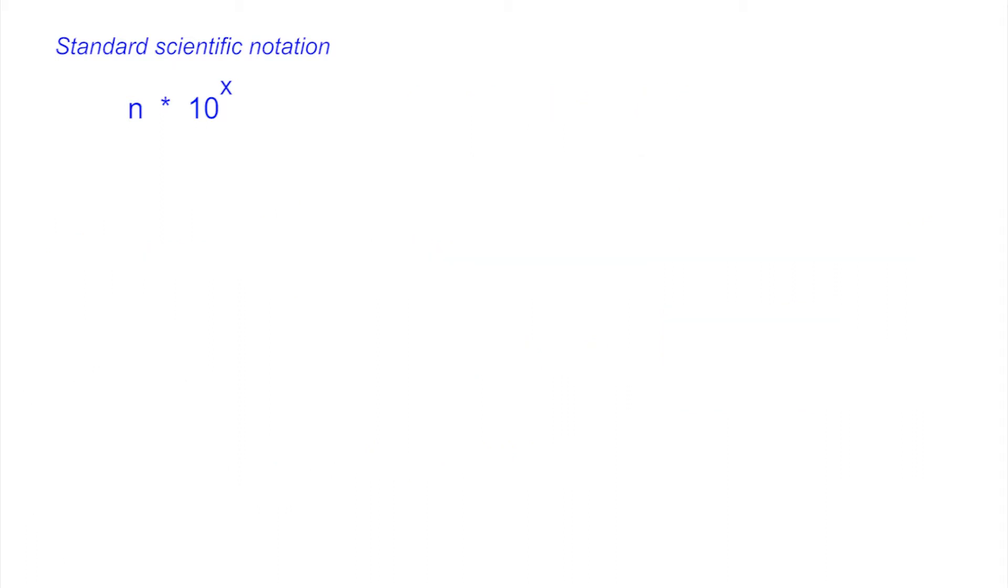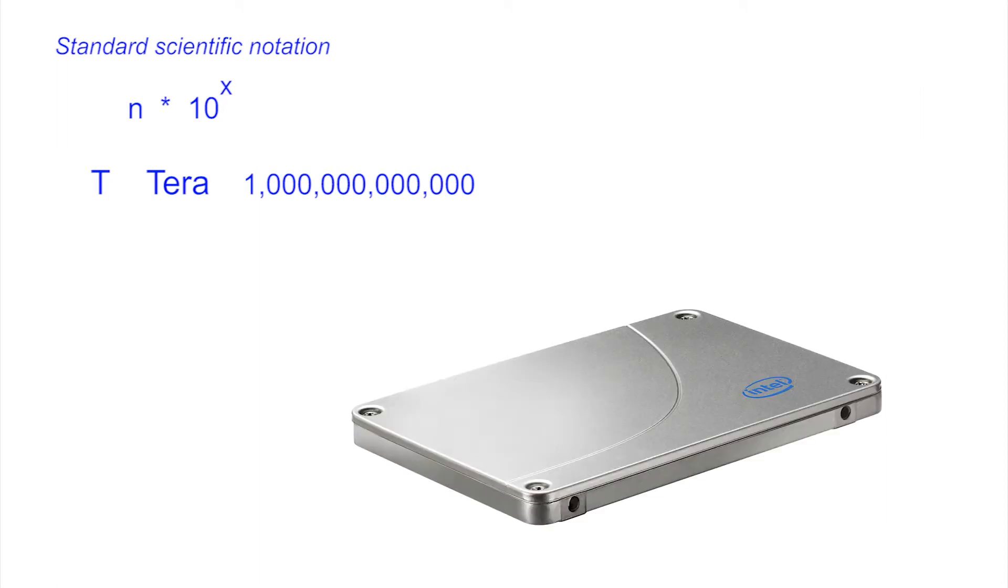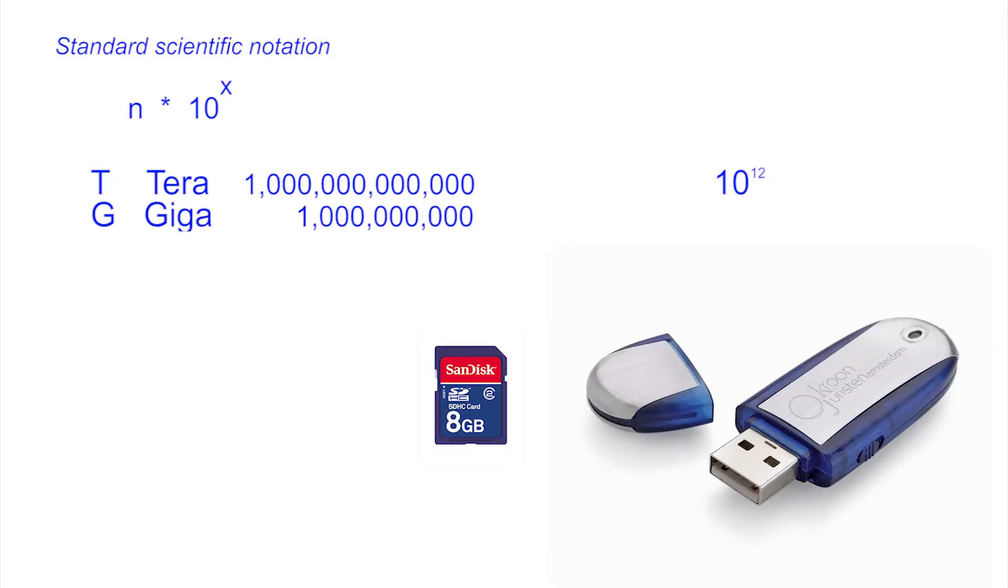Typical prefixes are T as in tera, a terabyte, used in disk sizes, 10 to the power of 12. G as in giga, a gigabyte, typical size of a USB stick, 10 to the power of 9.